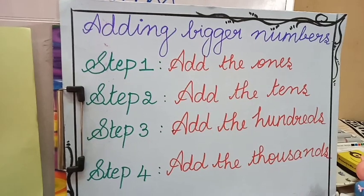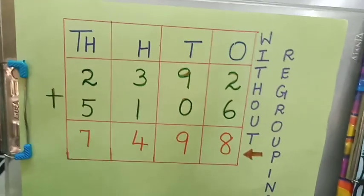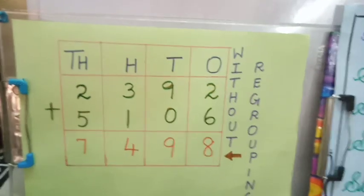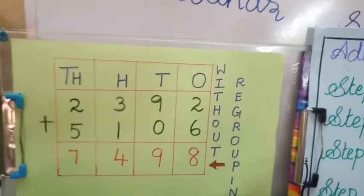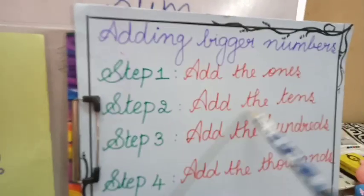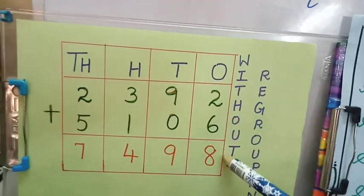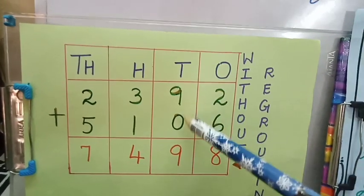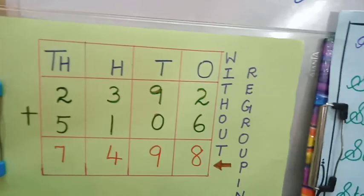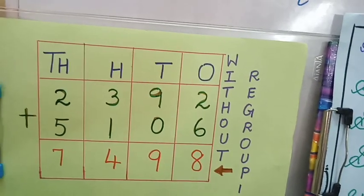Our next topic is adding bigger numbers. Adding bigger numbers is similar to 3-digit addition. Here we have an example. We are going to add 2392 with 5106. This is the procedure for addition without regrouping. Step 1: add the 1's — 6 plus 2 gives you 8. Then add the 10's — 9 plus 0 is 9. Then add the 100's — 3 plus 1 gives you 4. Finally, add the 1000's — 2 plus 5 is 7. So, 2392 plus 5106 gives you 7498.